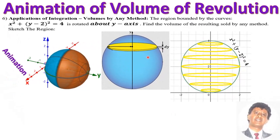The next animation is again an animation of volume of revolution. The region bounded by x squared plus (y minus 2) squared equals 4 is rotated about the y-axis. This is a circle centered at (0, 2) with radius 2, and when you rotate this around the y-axis, you obtain a sphere.